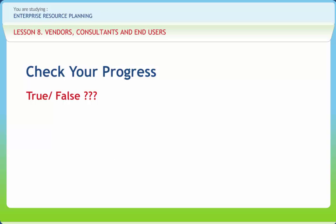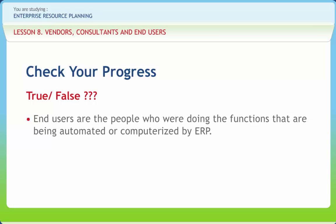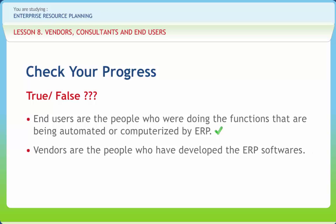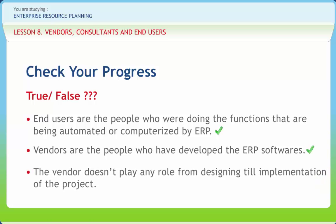Let us check if you have understood the concepts discussed in this lesson. End users are the people who are doing the functions that are being automated or computerized by ERP — Right. Vendors are the people who have developed the ERP software — Right. The vendor doesn't play any role from designing till implementation of the project — Wrong.